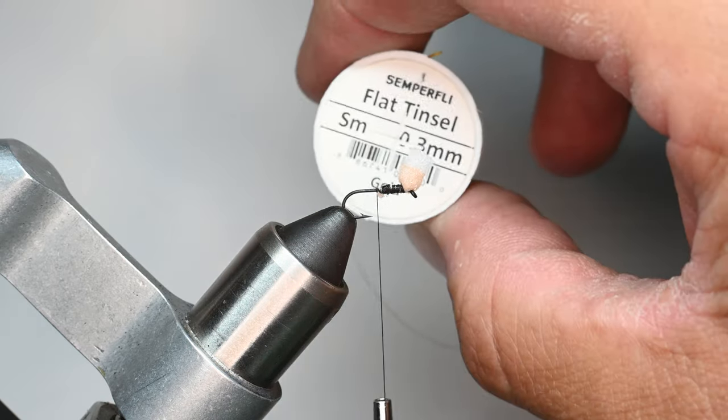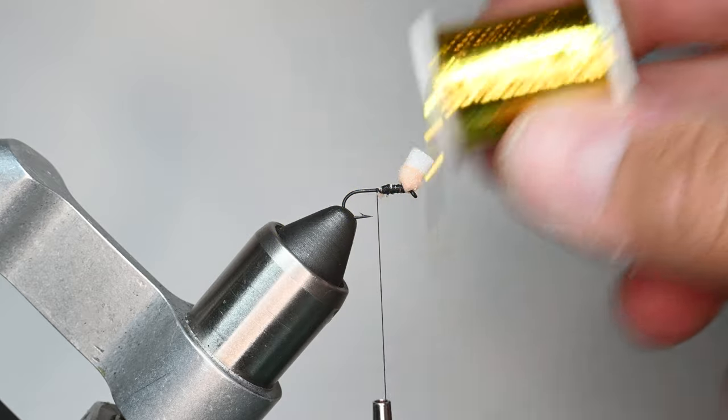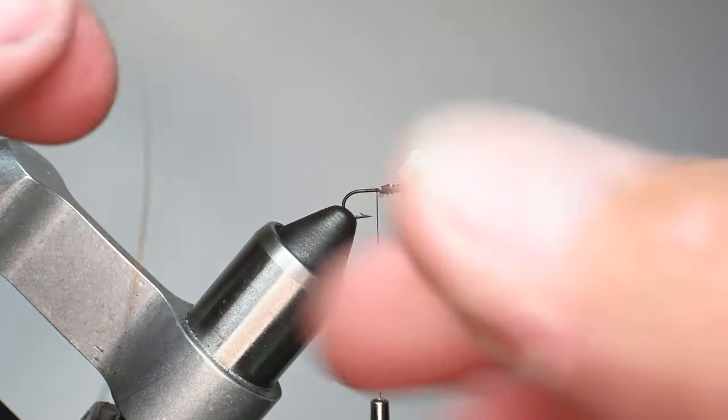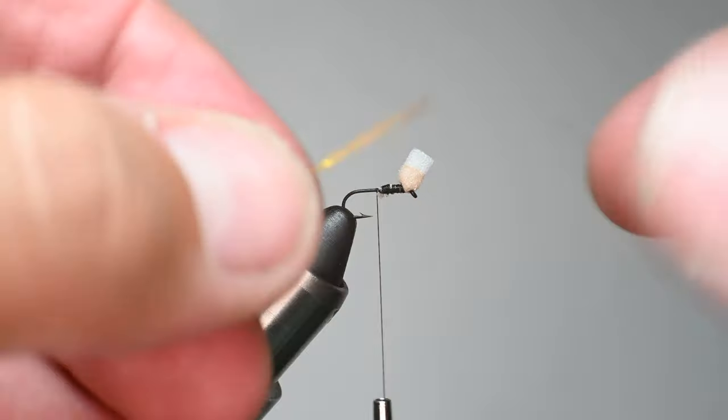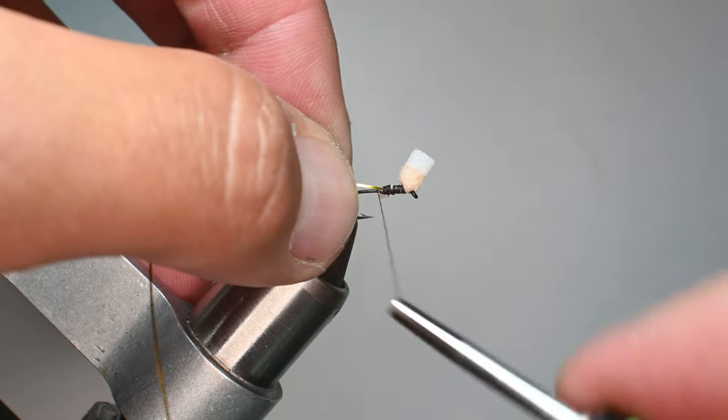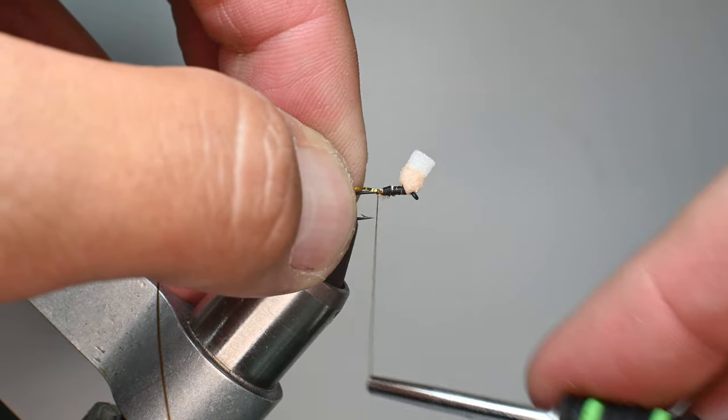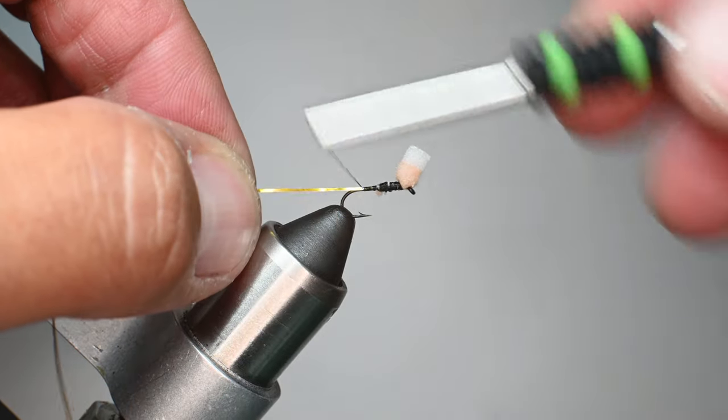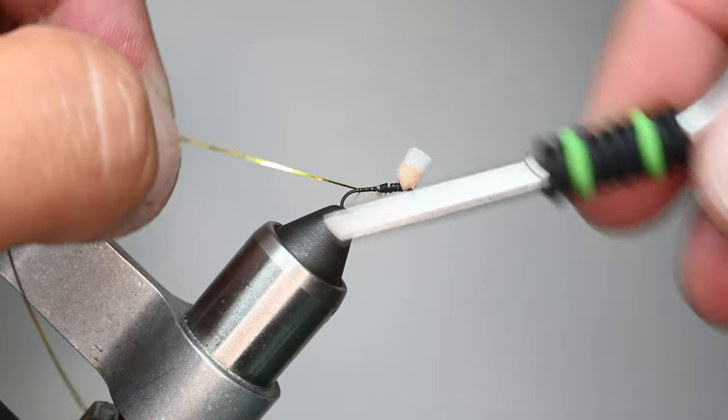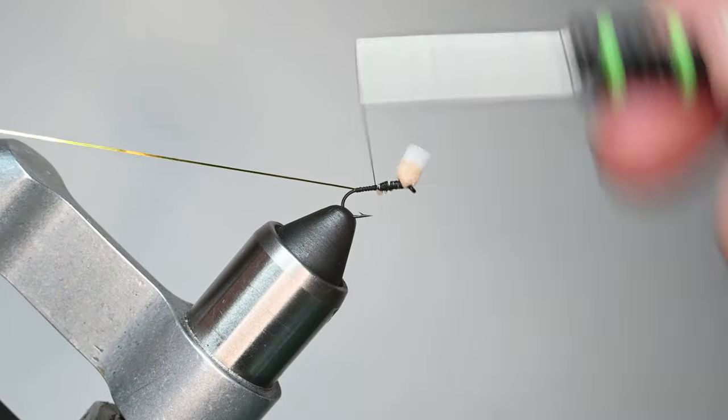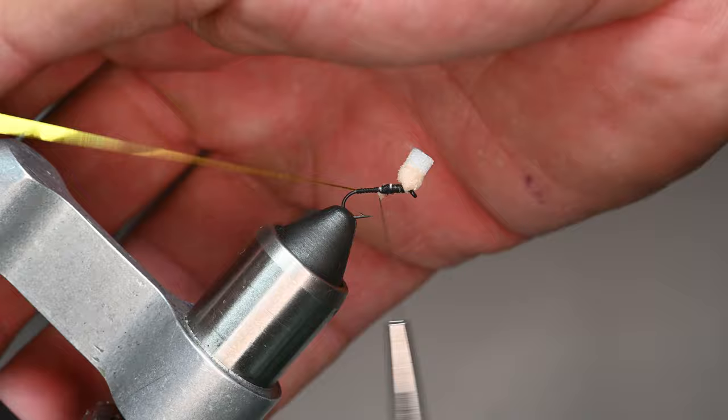I'm going to put in some ribbing. This is Semperfly gold tinsel in small, and we're just going to cut off about a three to four inch piece. I'll just tie that in right there at the rear section of the bend of the hook shank, then I'll work it right into the bend at the top of the bend, and then advance my thread back up and we'll get that out of the way.